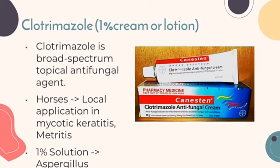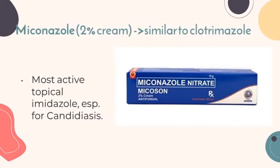Miconazole is a 2% cream that is similar to clotrimazole. It is the most active topical imidazole, especially for candidiasis. It is used for topical treatment of dermatophytes, Candida, Aspergillus, and Malassezia. The combination of miconazole and chlorhexidine can create a shampoo that is more effective than selenium sulfide for the treatment of seborrheic dermatitis in dogs caused by Malassezia.